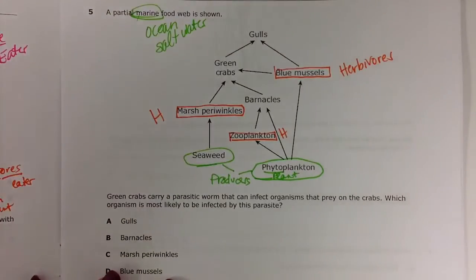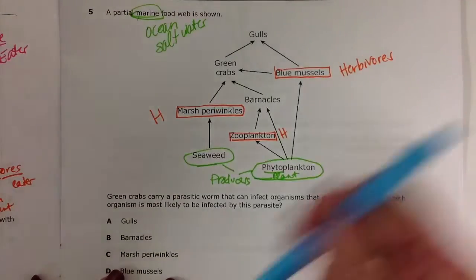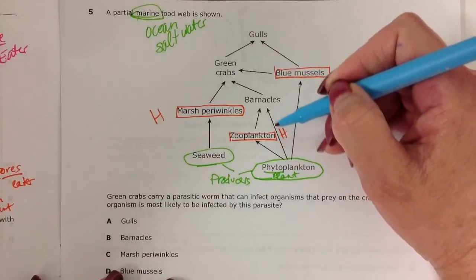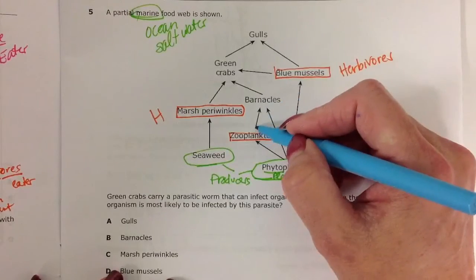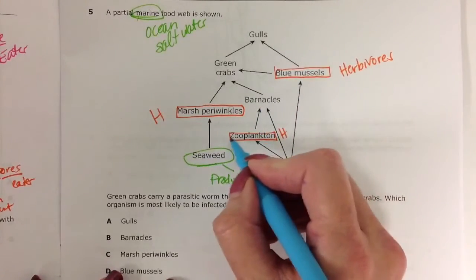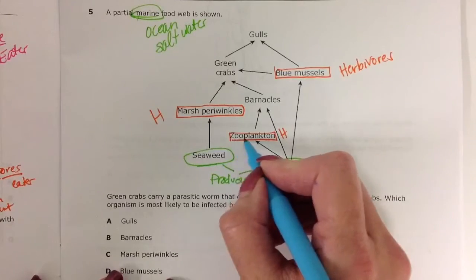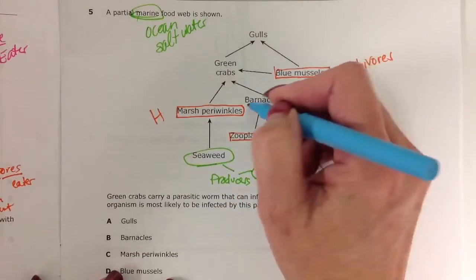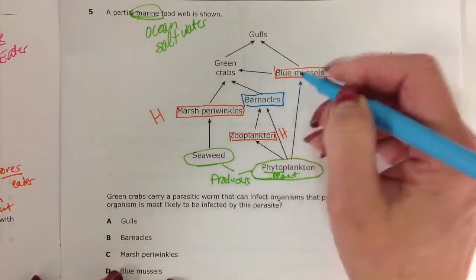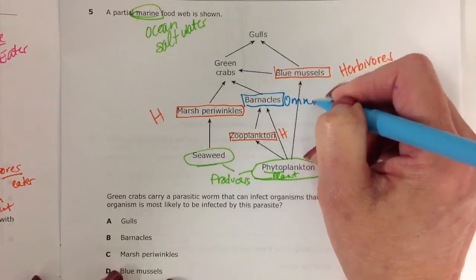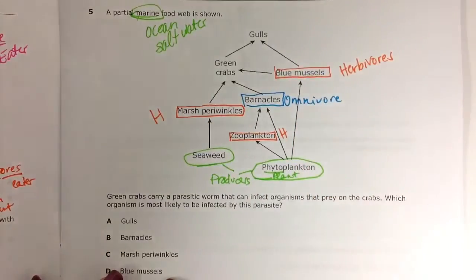The barnacle, on the other hand, if you look closely, the barnacle is getting energy from plants and from animals. Zooplankton or zooplankton means animal plankton. So the barnacle is an omnivore. It's eating both plant and animal.